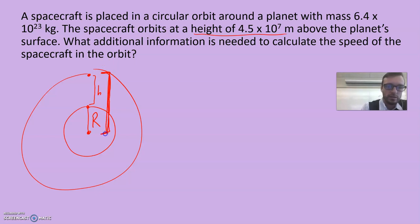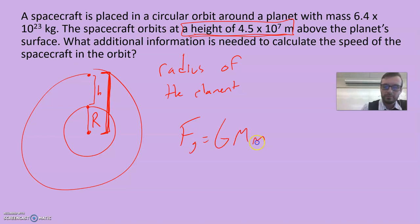Gravity doesn't act between the surface of the planet and the satellite. Gravity is an attractive force that acts between any two objects' centers of mass. So in addition to the height above the planet's surface, what we need is also the radius of the planet. Keep this in mind if you're doing orbital problems.